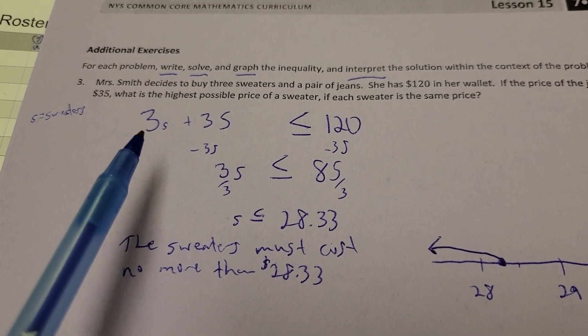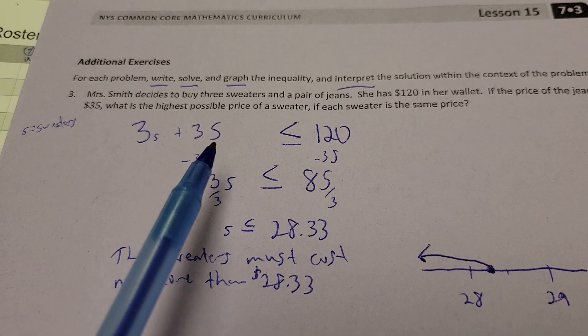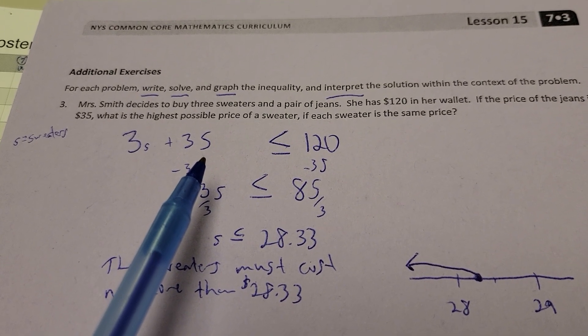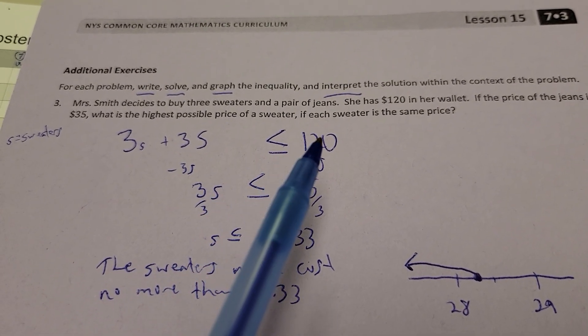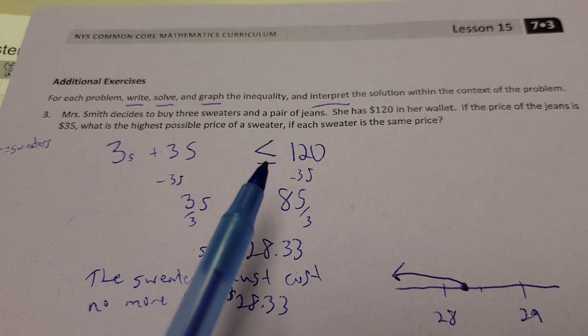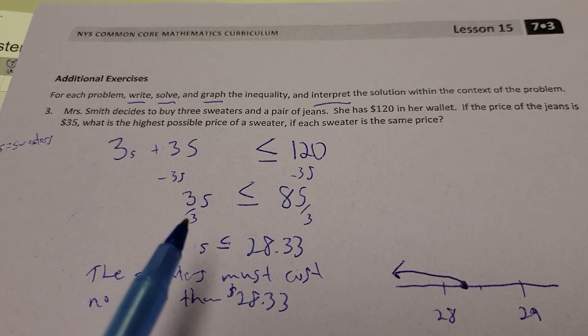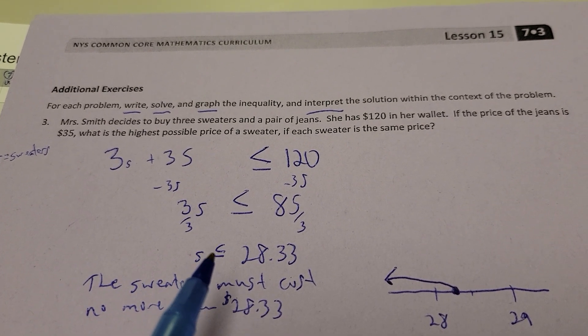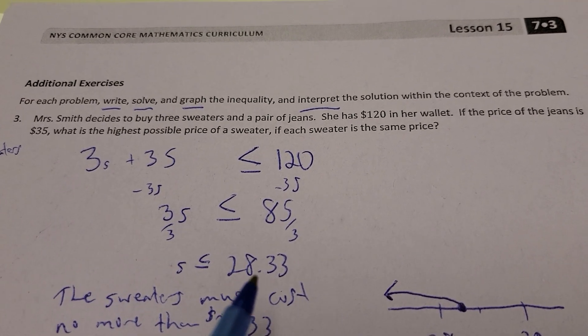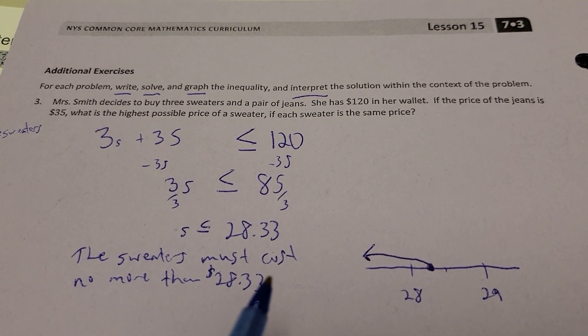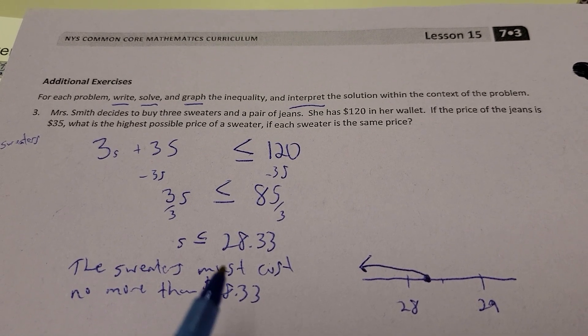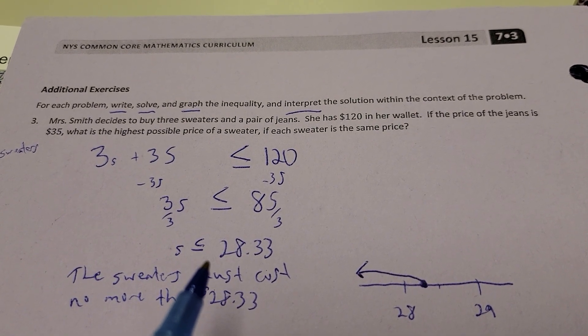So, we're going to use S for sweaters. So, we've got three sweaters plus $35, that's what it costs for the jeans. It has to be less than or equal to $120. Alright? So, solve it just like a normal equation, and you get S is less than or equal to $28.33. So, the sweaters must be no more than $28.33. Alright? It can be less than or equal to.